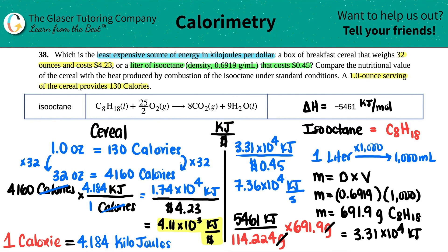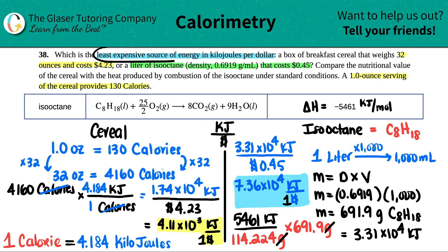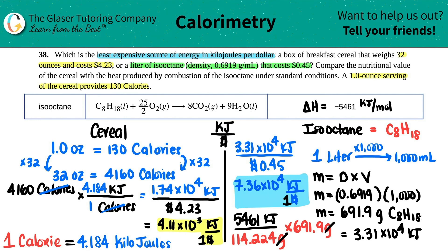Now we compare both answers. For the cereal: 4.11 times 10 to the third kilojoules per dollar. For isooctane: 7.36 times 10 to the fourth kilojoules per dollar. We want the most energy per dollar, so the least expensive source is isooctane — you get way more energy for one dollar compared to the cereal. Isooctane is the least expensive source of energy.